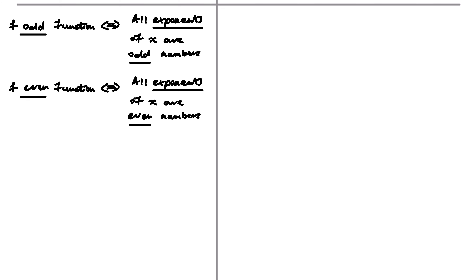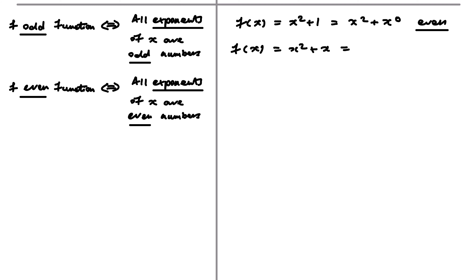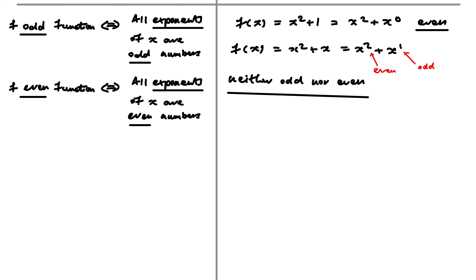For example, f(x) = x² + 1, which is x² + x⁰, has exponents 2 and 0 — both even — so it's an even function. However, f(x) = x² + x has exponents 2 and 1, a mixture of even and odd, so it is neither even nor odd. It's important to understand this is more restrictive than just looking at the leading degree.